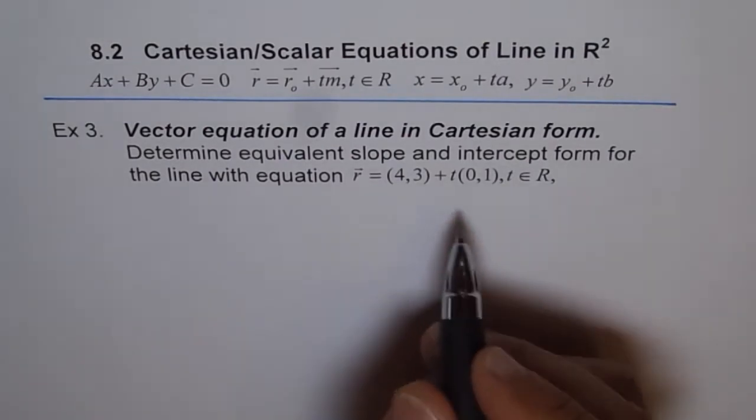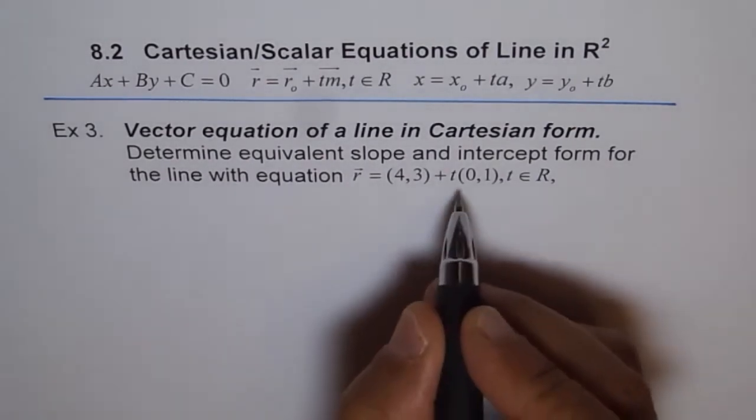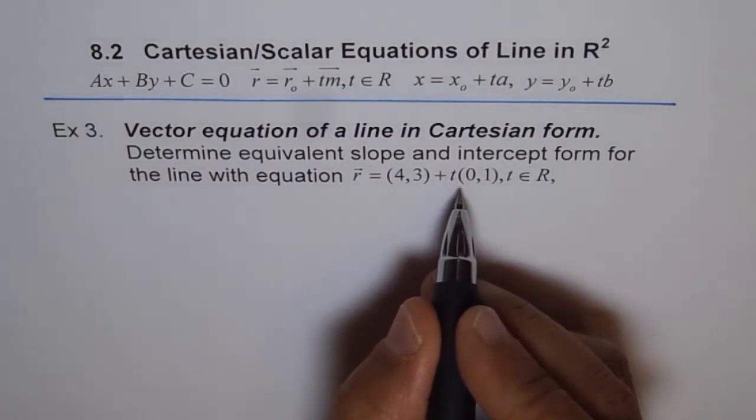Now, we will go with the normal procedure. The direction number is known to us, and from the direction number, we will find the slope. So what is the direction number?